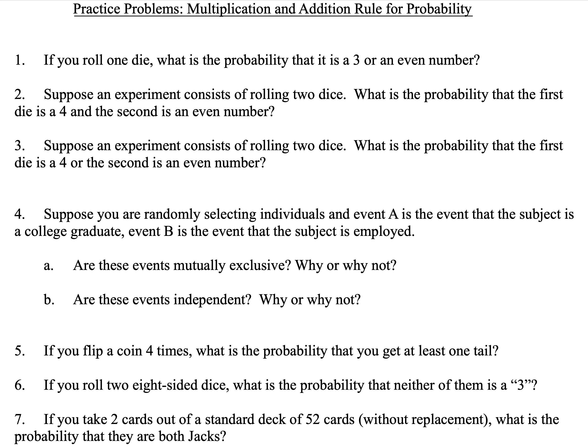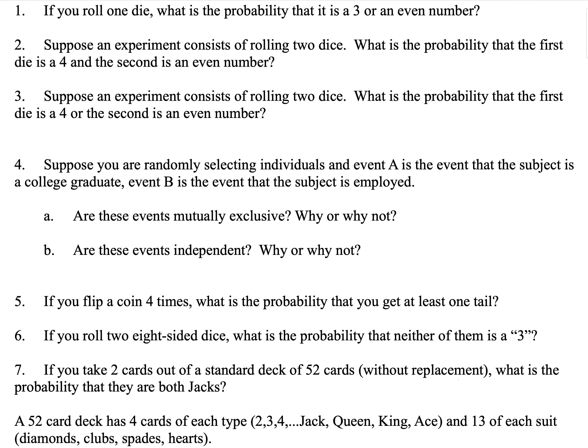Number five: if you flip a coin four times, what is the probability that you get at least one tail? Number six: if you roll two eight-sided dice, what is the probability that neither of them is a three? And finally, number seven: if you take two cards out of a standard deck of 52 cards without replacement — you take one out and take another without putting the first one back — what is the probability that they are both jacks? A 52-card deck has four cards of each type, so there are four jacks, and 13 of each suit.